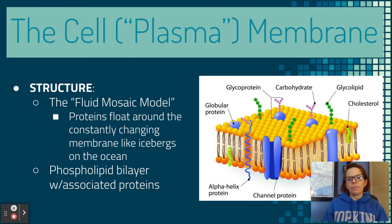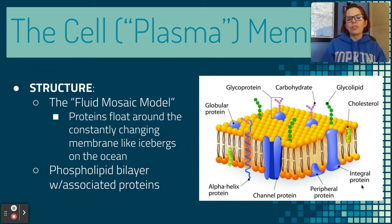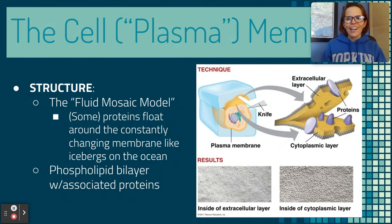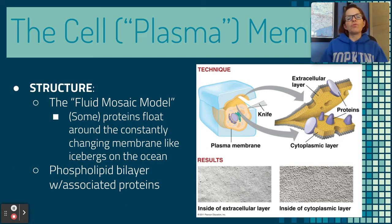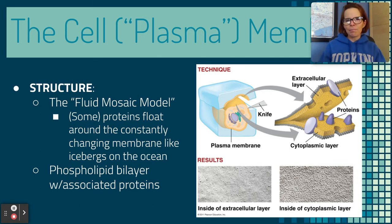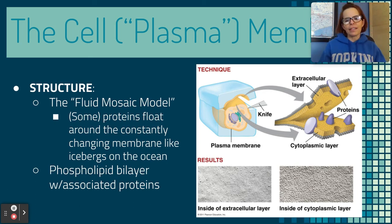You should be able to identify everything in this diagram for our test — other than globular protein and alpha helix protein, everything else could be on a test. Scientists have been able to cut through the cell membrane and separate the two layers of the bilayer, then photograph it using special electron microscopy. It's cool to see the inside bumps and the protein bumps on both layers.